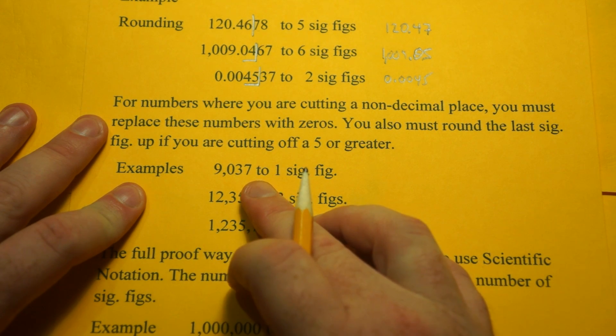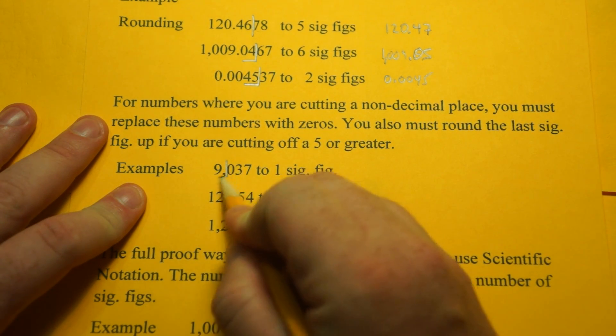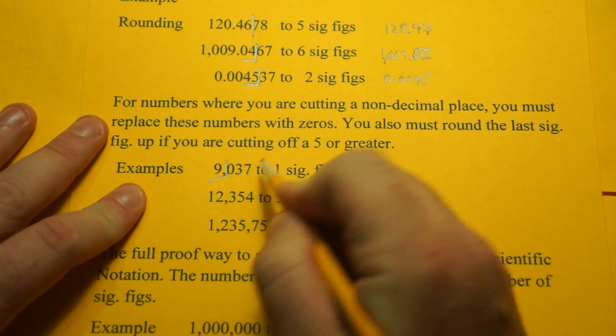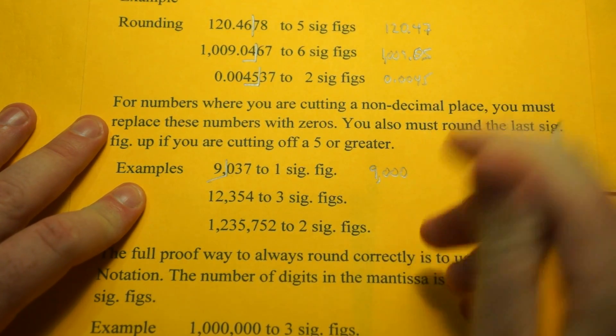So 9,037 to 1 sig fig. Cutting off these numbers, but we have to replace them with 0s. So it's going to be 9,000. We want to hold the value.